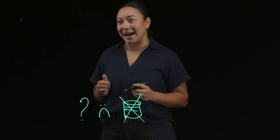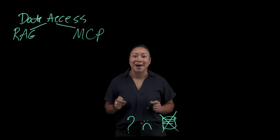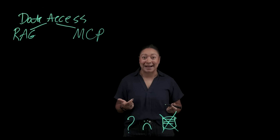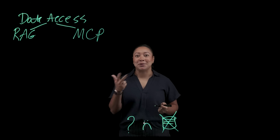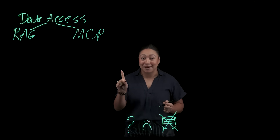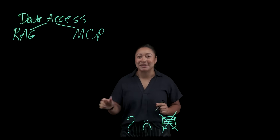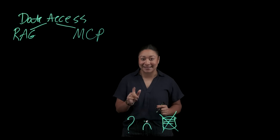Retrieval Augmented Generation and Model Context Protocol — RAG and MCP — are two methods that allow AI to provide more insight, answer questions, and help users while being grounded in actual information. That information could be all kinds of things: documents, PDFs, videos, websites, even systems or applications. While these two seem similar at first glance, they have some significant differences that set them apart.